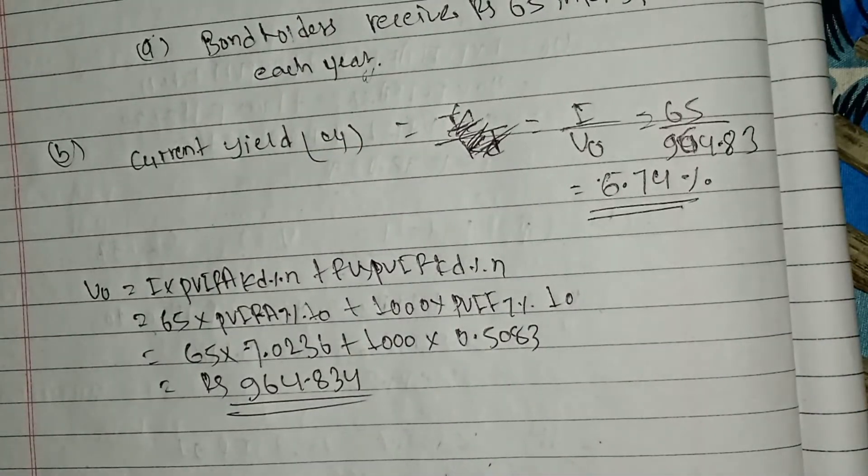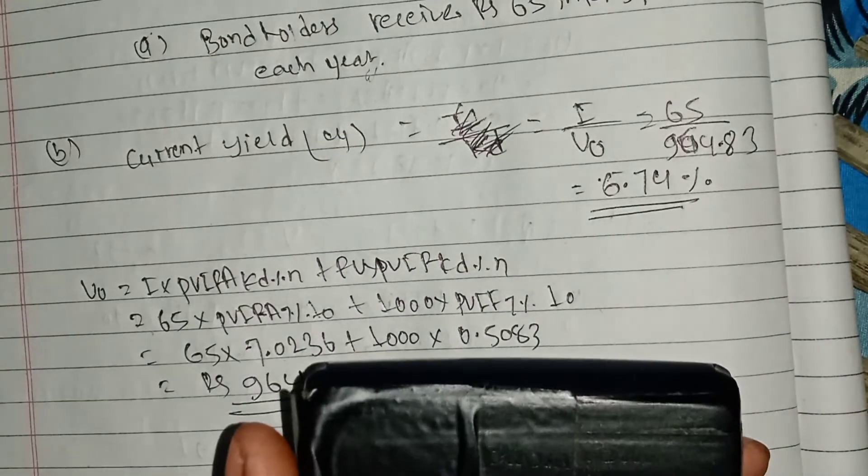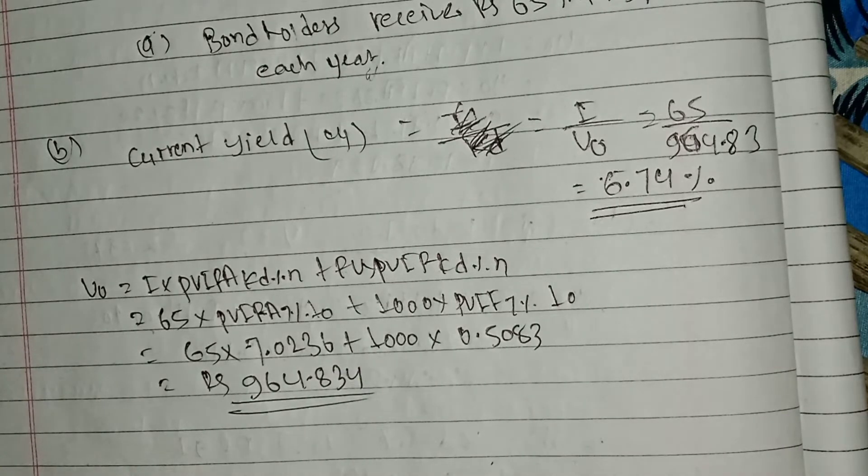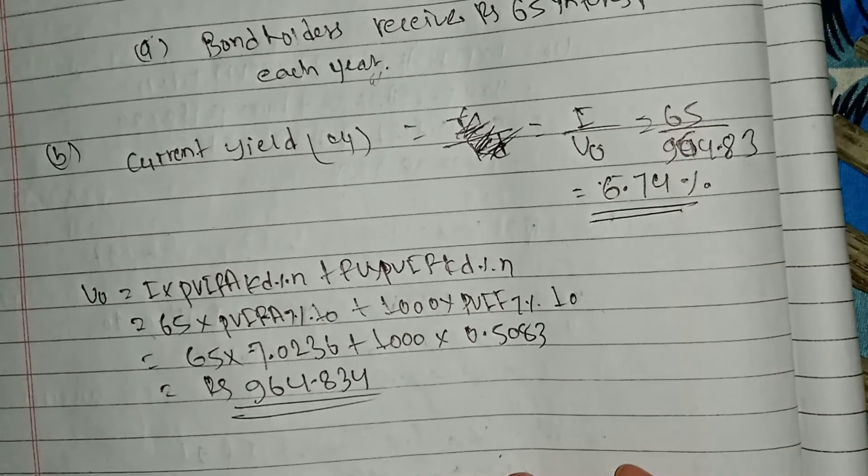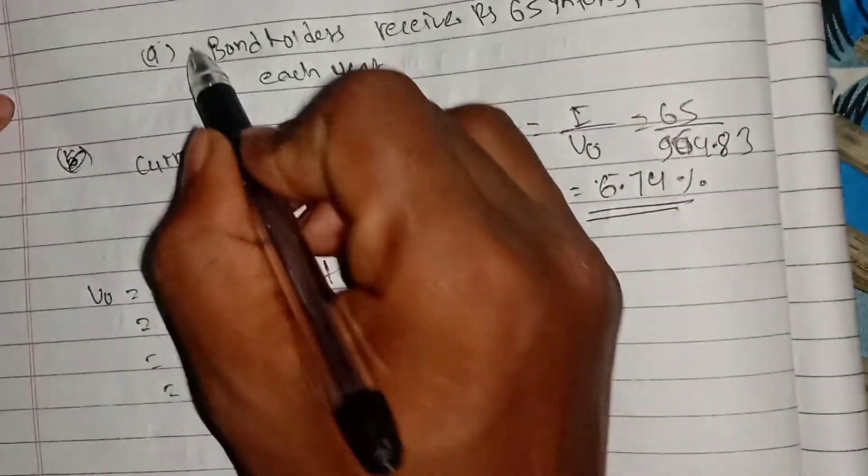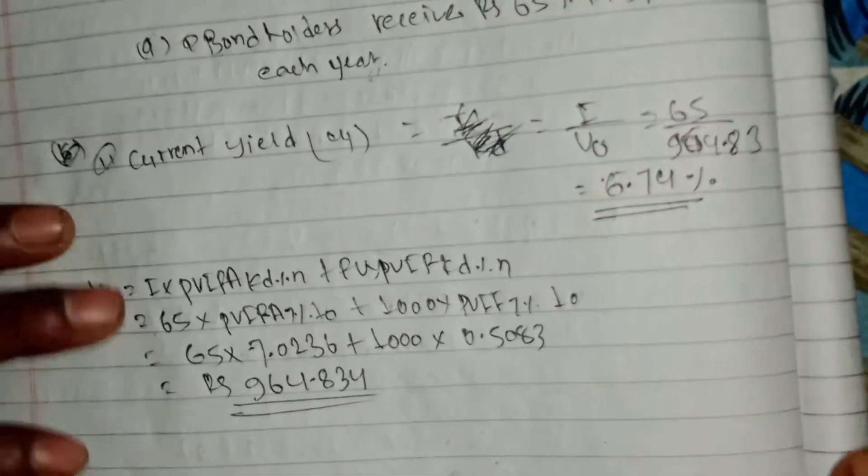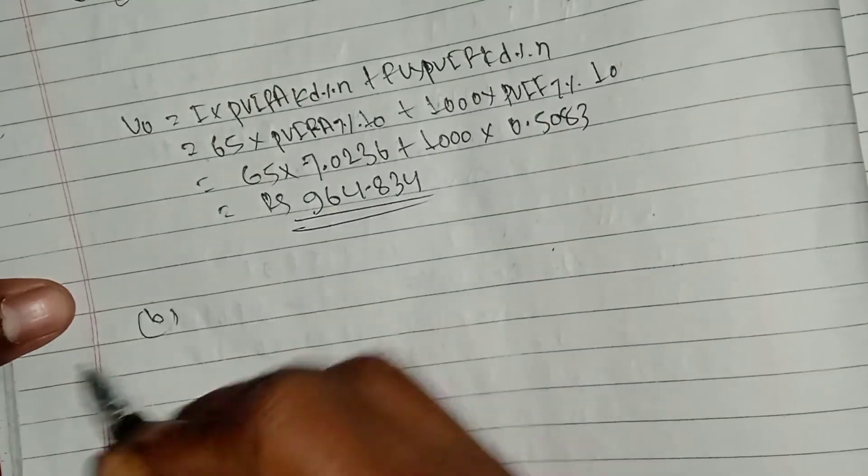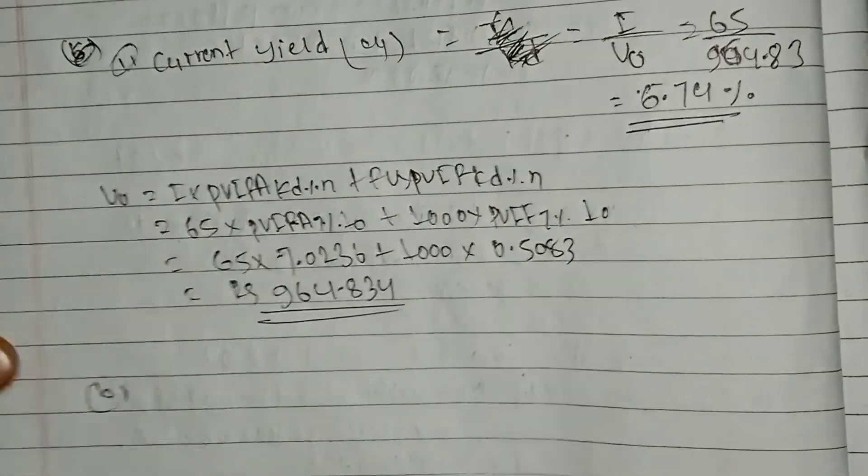The current yield is calculated as 65 divided by 964.883, which gives us 6.74%. This is the current yield.